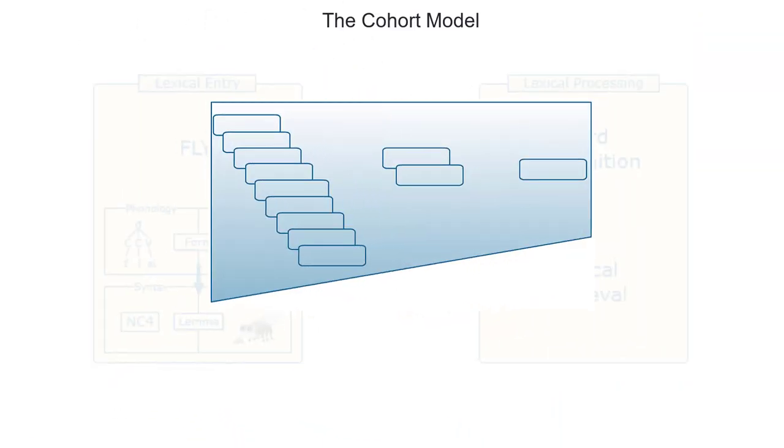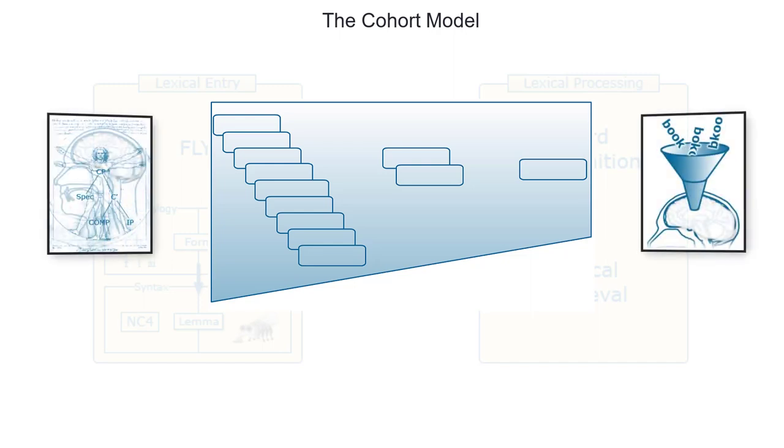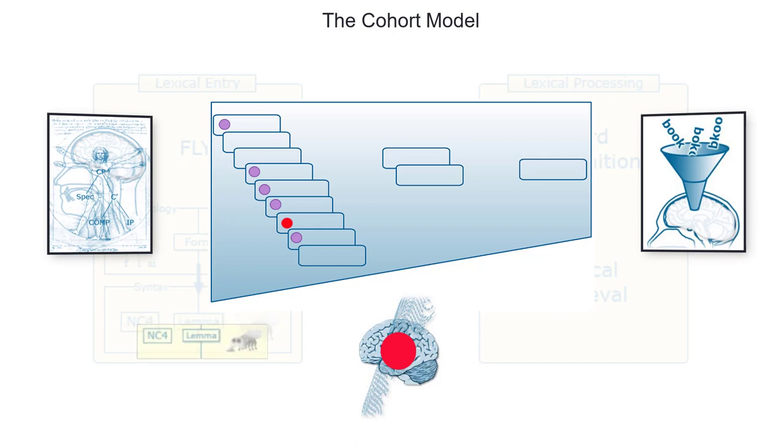The cohort model was shaped to account for psychological data on the perception of language. It assumes that there is a separate active processing element associated with each item in the lexicon. As soon as there is a match between the input and the perceptual specifications of these elements, syntactic and semantic specifications associated with the respective lexical item are brought into operation.